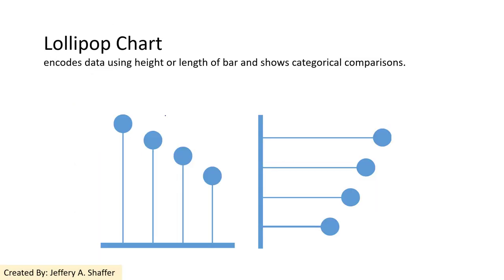Next, we are talking about some variations of the bar chart. The first one is the lollipop chart, which still uses length to represent variables in different categories. However, it has a big dot and a very thin line, where the position of the dot indicates the value in each category.